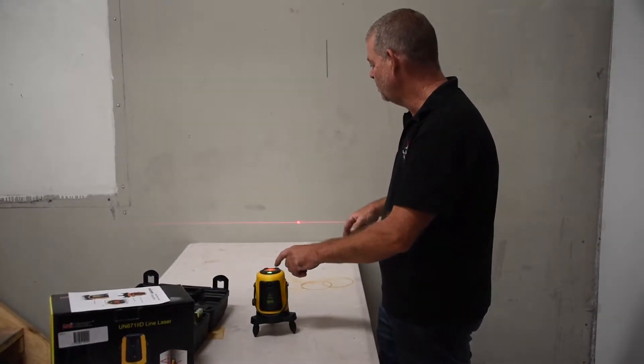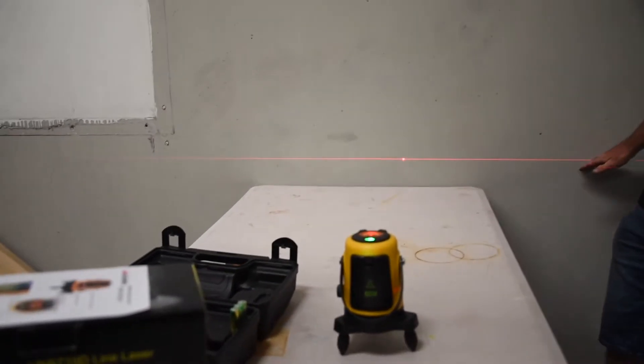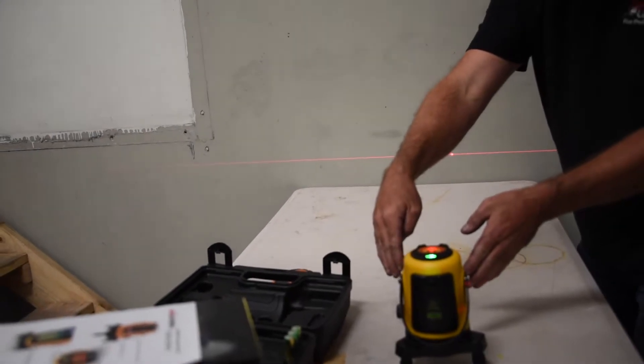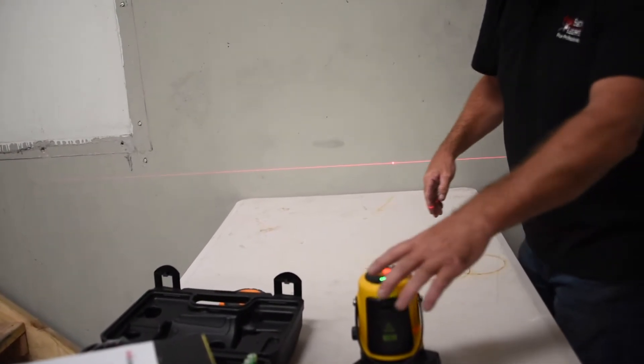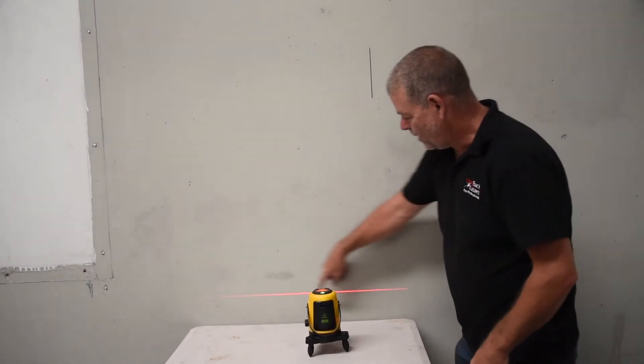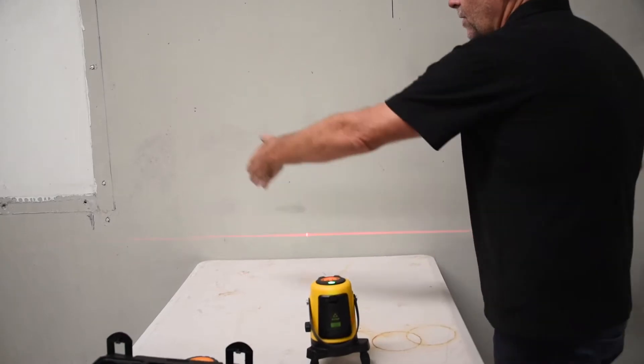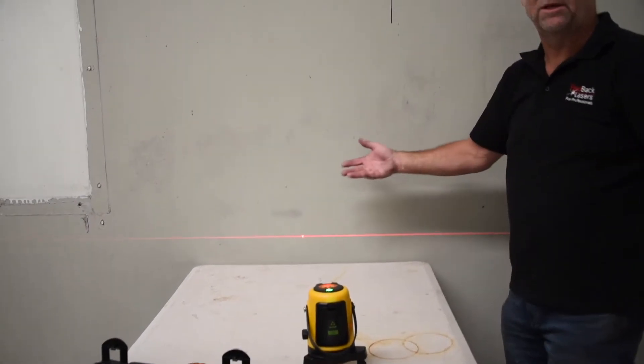If we turn on just that horizontal beam, now what we've got is a horizontal auto-level line which comes out at an arc angle of around about 120 degrees. So if we bring that close to the wall, you'll see that we have quite a short line, and the further we go away, obviously the further that arcs out and the bigger the line we get.